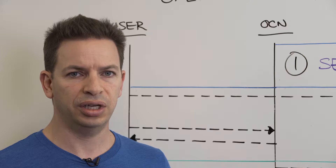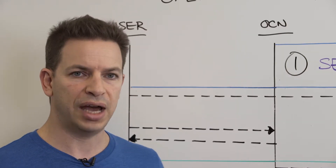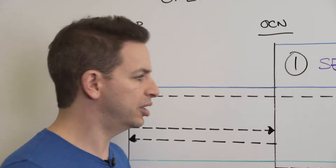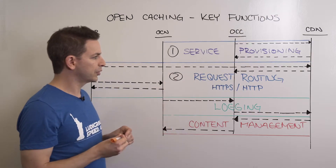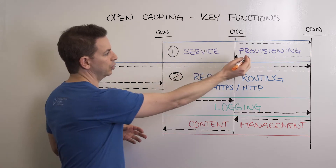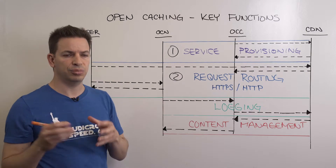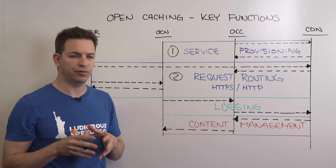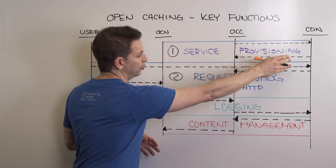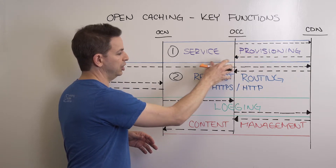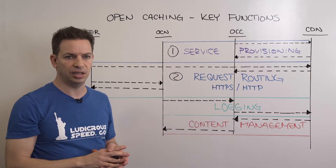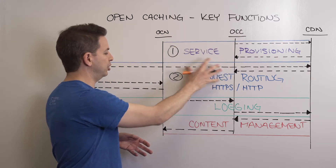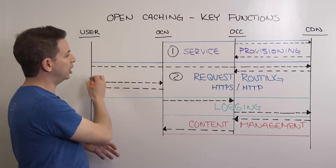Once service provisioning is complete and the bootstrap process is done, we move on to the delegation process from the CDN into the open caching system. This is known as request routing and is the second part of the call flow. A CDN typically receives a request from a user after being delegated from a given publisher, and instead of delivering from its own caches, the CDN delegates content delivery through the OCC to the open cache system in this individual ISP. The OCC then locates the proper OCN to deliver that content and steers traffic to it.